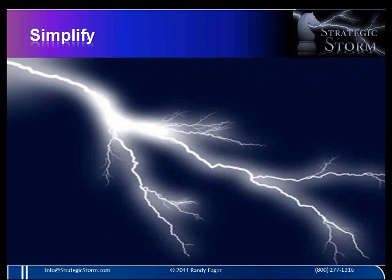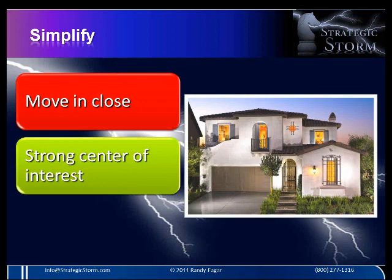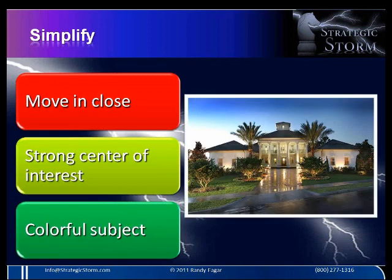One of the biggest errors made by amateur photographers when taking a photo of a home is backing up too far. Get right up close to the home so that you frame in just the home itself. Make sure that in at least one of your photos you have a strong center of interest that draws the viewer in. Take advantage of the color in a home when possible. For white stucco homes with no color, these types of homes show extremely well at dusk, and you can use colored lights to subtly imbue color.